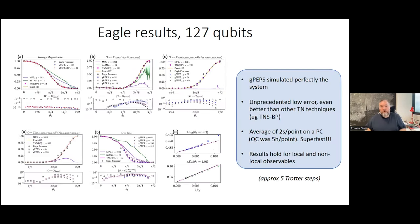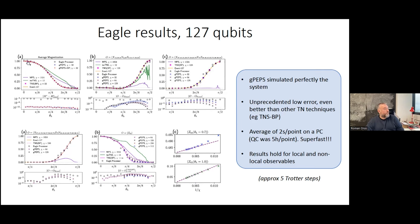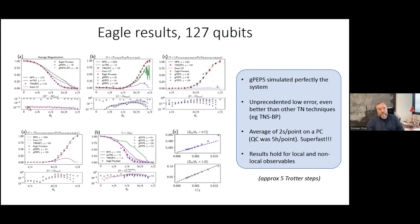These are some of the results for 127 qubits — the original IBM experiment. Comparing with the results from the Eagle processor, our GPEPS technique really nailed it, getting exactly the correct results. For comparison, we also plot results from the MPS and isometric tensor network techniques IBM used, which were not working well. For the average magnetization, the error we obtained was 10^-15 — machine precision. For local observables it was around 10^-5 to 10^-10. The accuracy was really great.